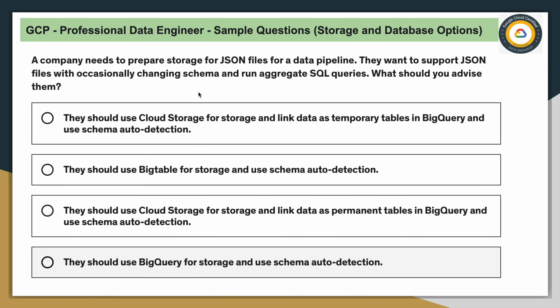The last question is tricky and requires thorough theoretical and practical knowledge. A company needs to prepare storage for JSON files for a data pipeline. The JSON files have an occasionally changing schema, and the company also needs to run aggregated SQL queries on top of the data. What should you advise them? Key conditions: JSON format, schema is not stable, and they need to run aggregated SQL queries.